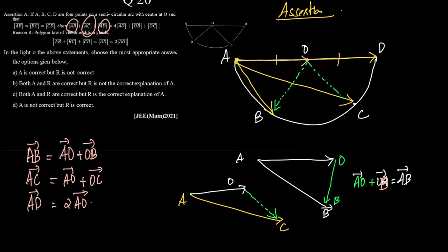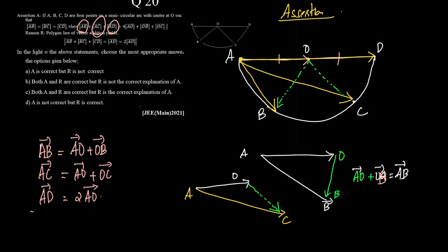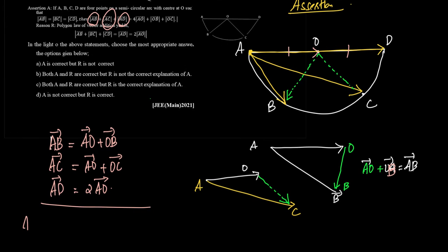In which case, if I add these three equations, what do I get? Vector AB plus vector AC plus vector AD is equal to 2 plus 1, 3 plus 1, 4, 4 vector AO plus vector OB plus vector OC.